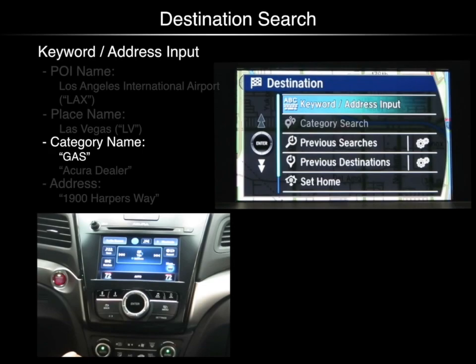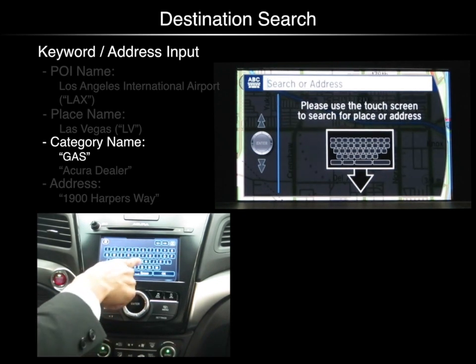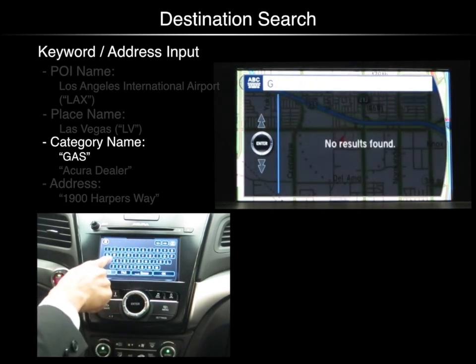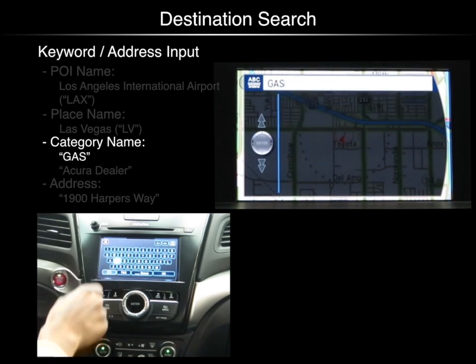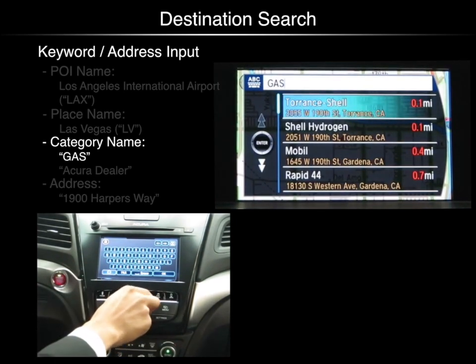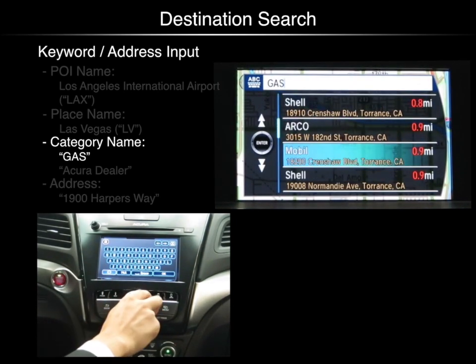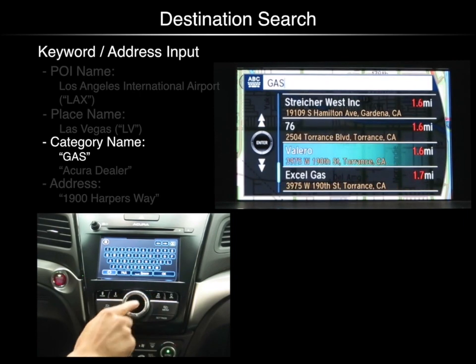You can also search for a destination by category name. Push enter to select keyword address input. Use the keypad to input a category. Rotate the interface dial to scroll through the list. When you find the destination you want, select it by pushing enter.